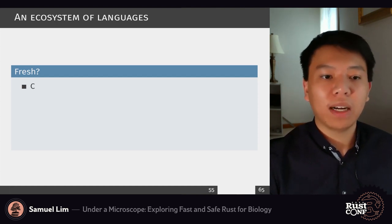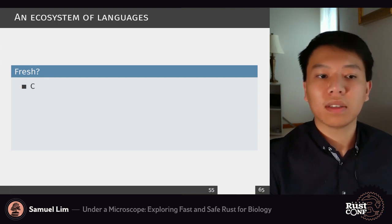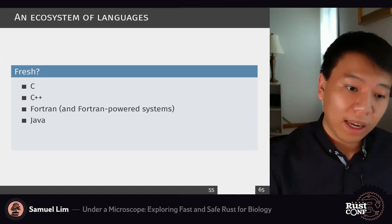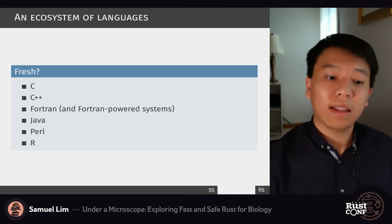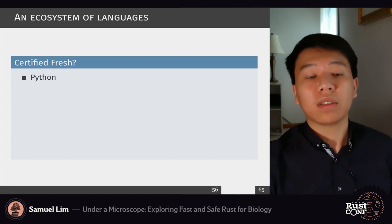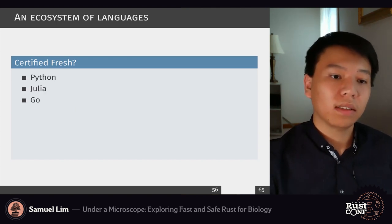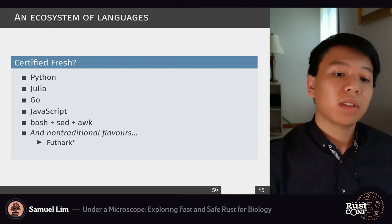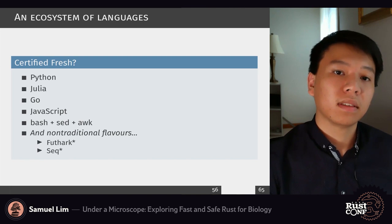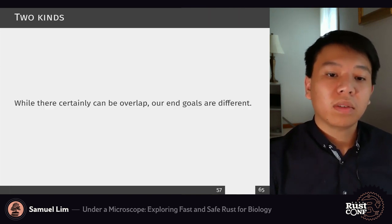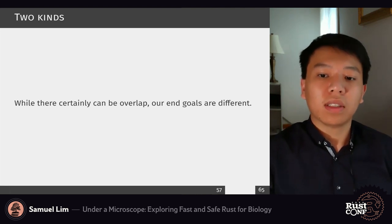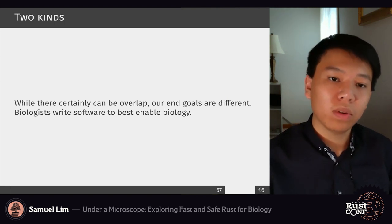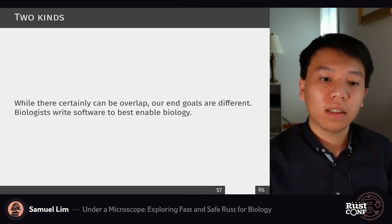Classics of bioinformatics and computational biology — especially for RNA sequencing — include C, C++, Fortran-powered systems, and other languages such as Java, Perl, and analysis in R. Newer languages are also cropping up, such as Python, Julia, Go, JavaScript, general scripting, and some languages you may have never heard of, such as Futhark or Seek. While there's certainly overlap between biologists and software engineers, the end goal is different: biologists write software to best enable biology, and the existing tools we can connect are the tools we're going to use.